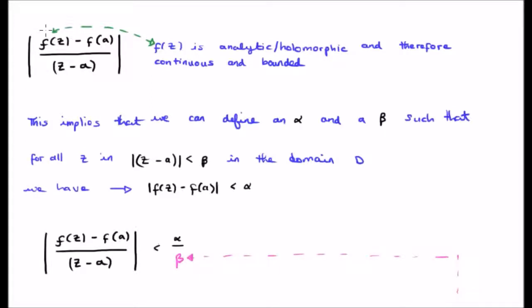So what we can say is that the magnitude of the integrand is always going to be less than alpha over beta. Whatever the maximum value of the function is, because it's bounded, get a number that's slightly bigger than it and you can have alpha over beta.